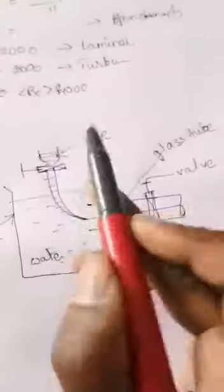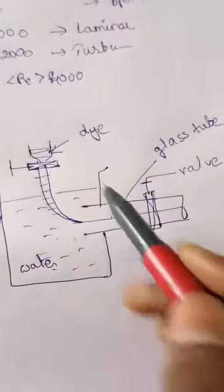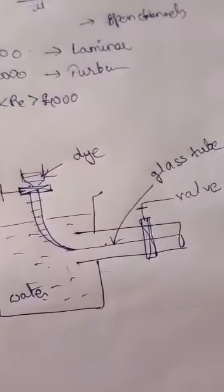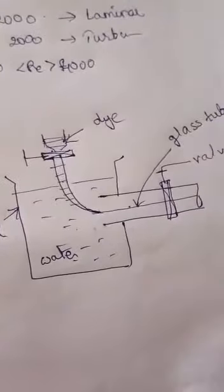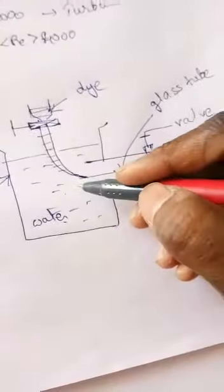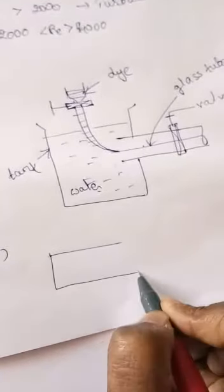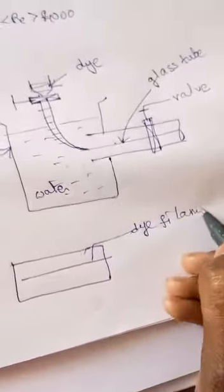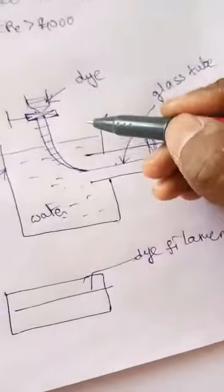Now we will see the working of this apparatus. Water from the tank is allowed to flow through the glass tube, and the velocity of flow is varied by the regulating valve. A liquid dye of some specific gravity is introduced into the glass tube. When the velocity of flow is low, the dye filament in the glass tube will be in the form of a straight line.